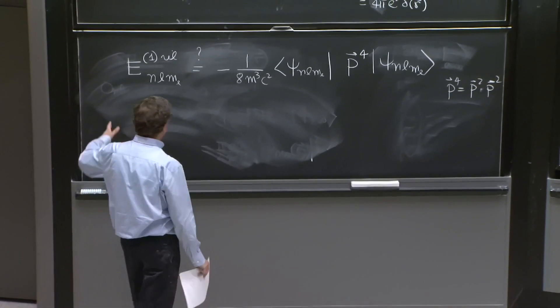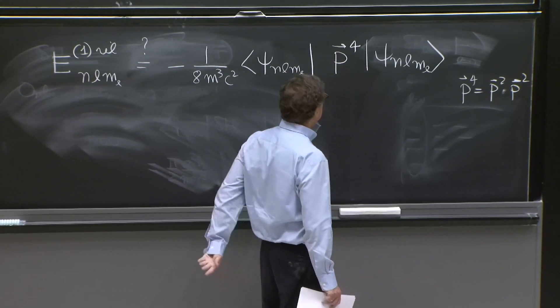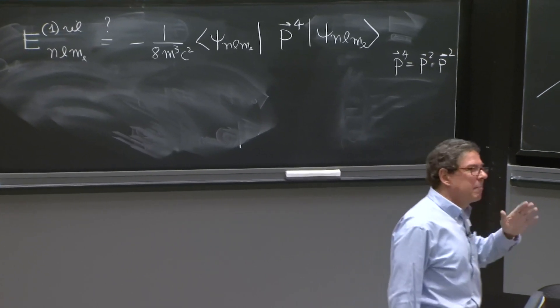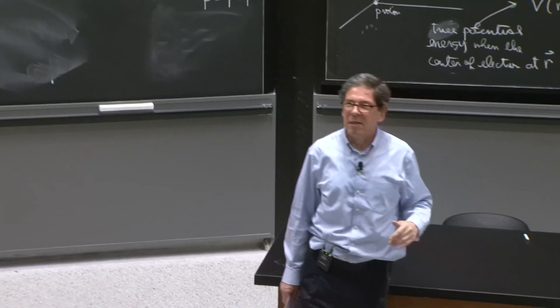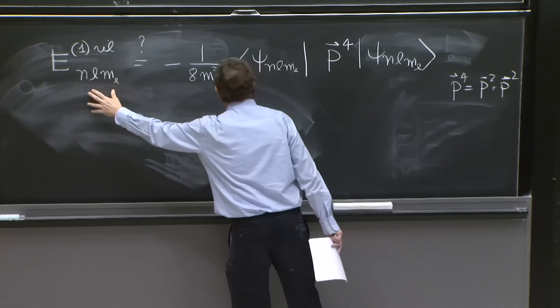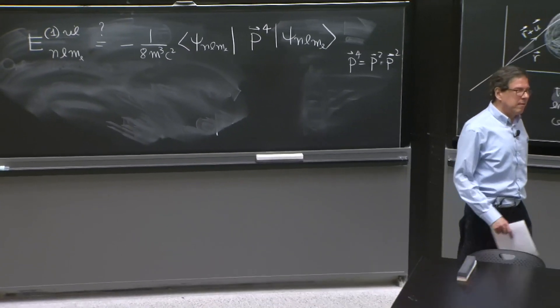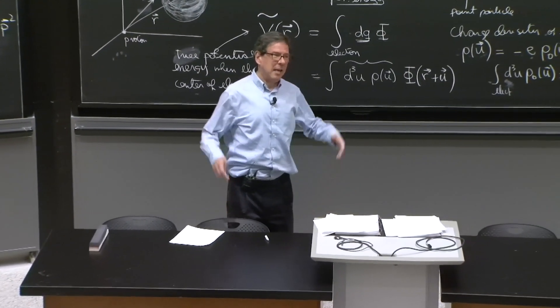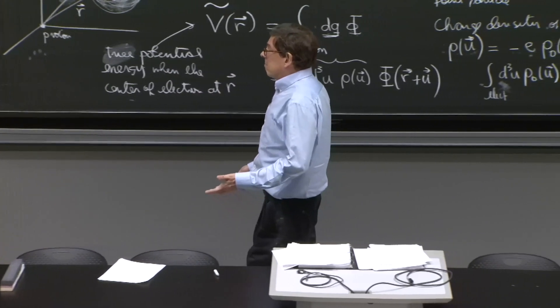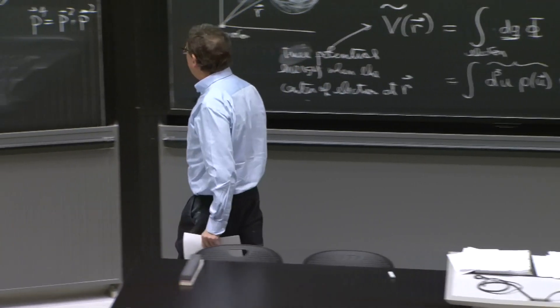That seems reasonable. The first order of corrections should be found by taking the states and finding this. But there is a big question mark. And this kind of question is going to come up every time you think about these things. This formula applies for non-degenerate perturbation theory. And if the hydrogen atom is anything, it's a system with a lot of degeneracies. So why can I use that? Or can I use that?